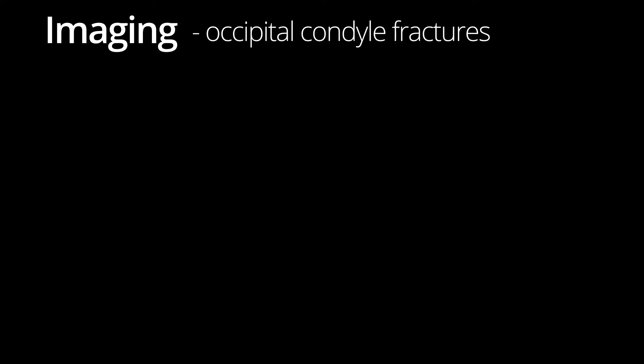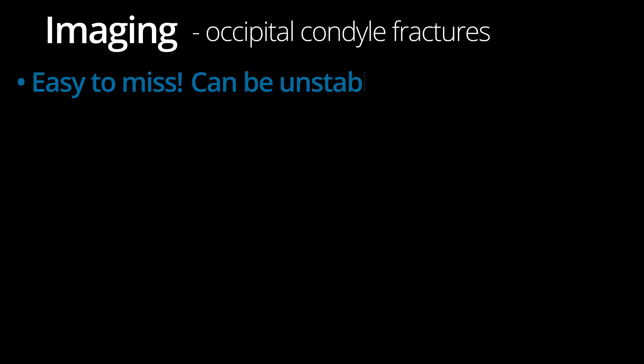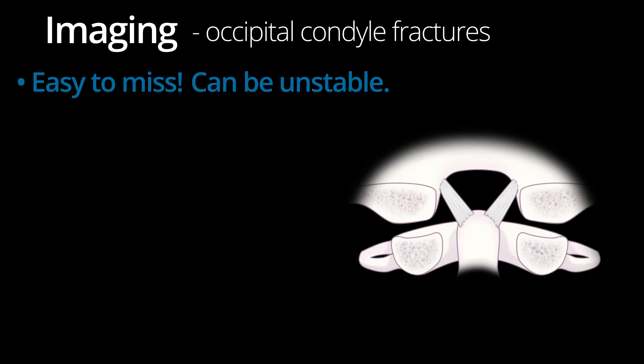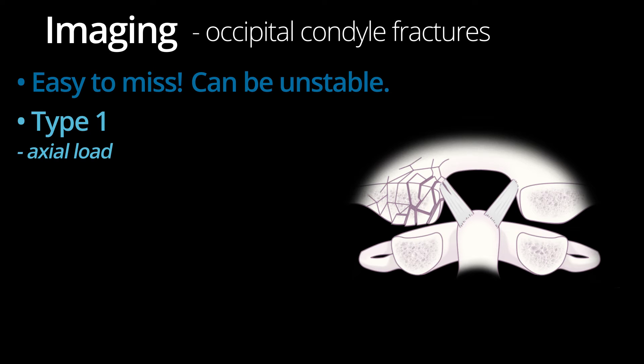Occipital condyle fractures are pretty rare, but familiarity with them is important because they are easy to miss and can be unstable when associated with ligamentous injury. There is a classification system. Type 1 occipital condyle fractures are usually an impaction-type fracture that is the result of excessive axial loading. In these fractures, the occipital condyle is usually comminuted and fracture fragments are not typically displaced into the foramen magnum.